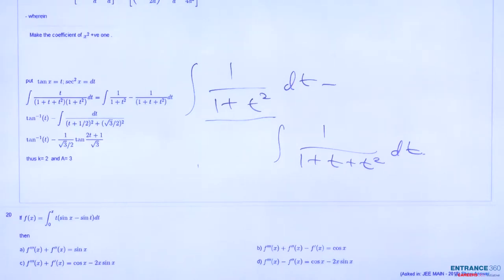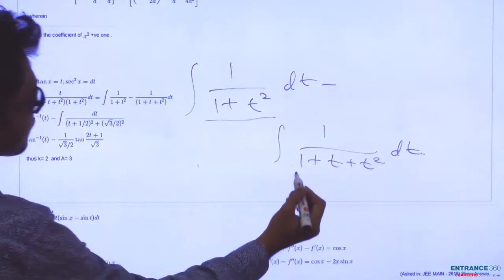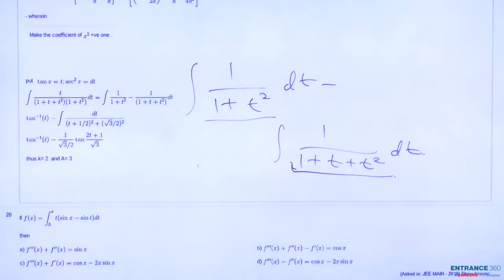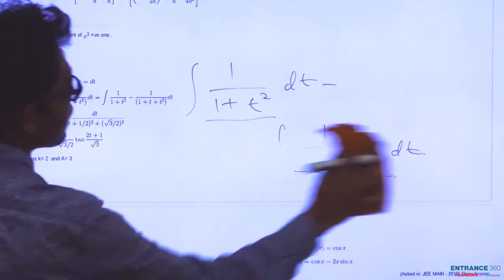This integration of 1 by 1 plus t squared dt gives tan inverse of t, and this function you factorize and write in square form.